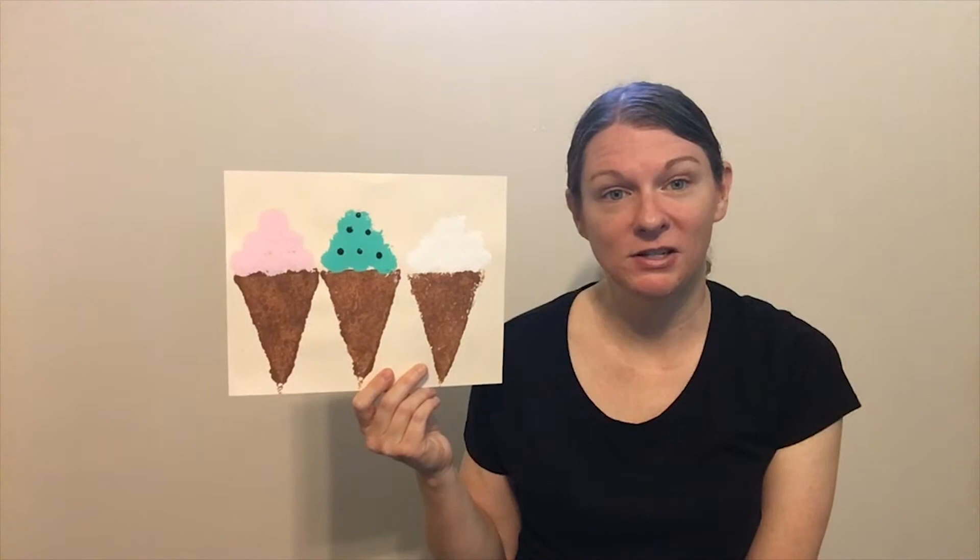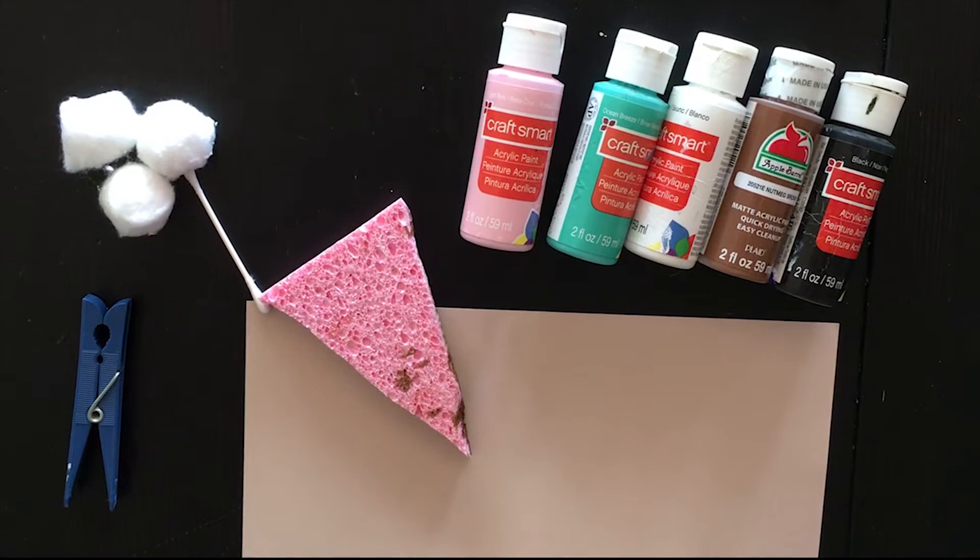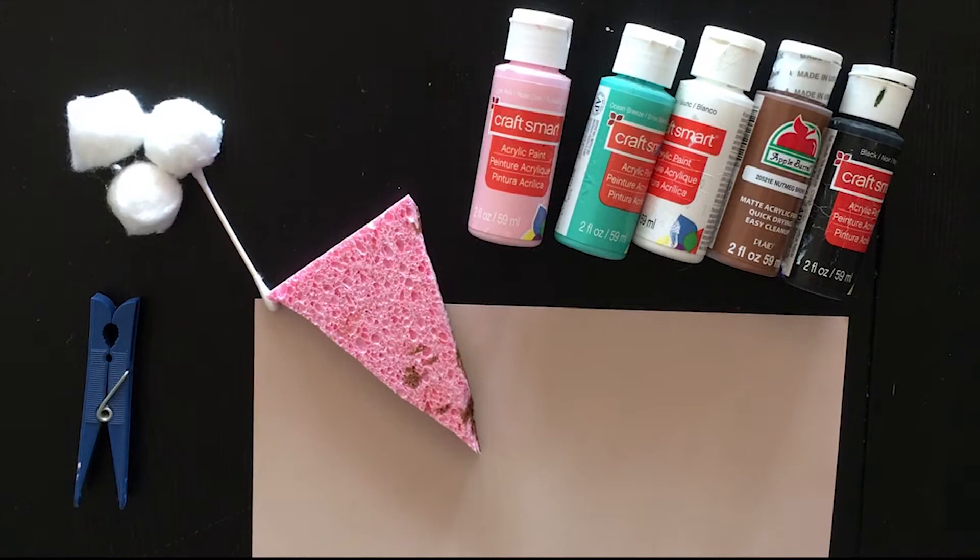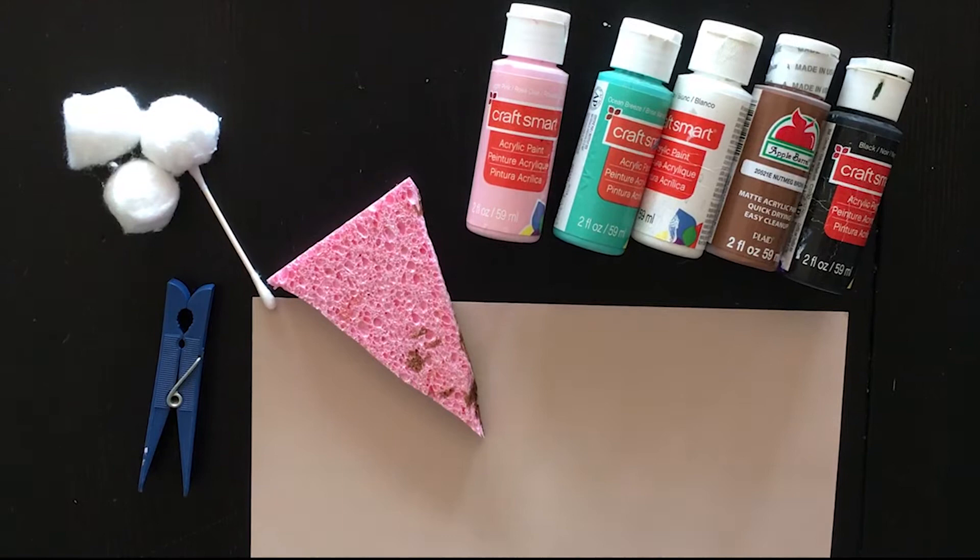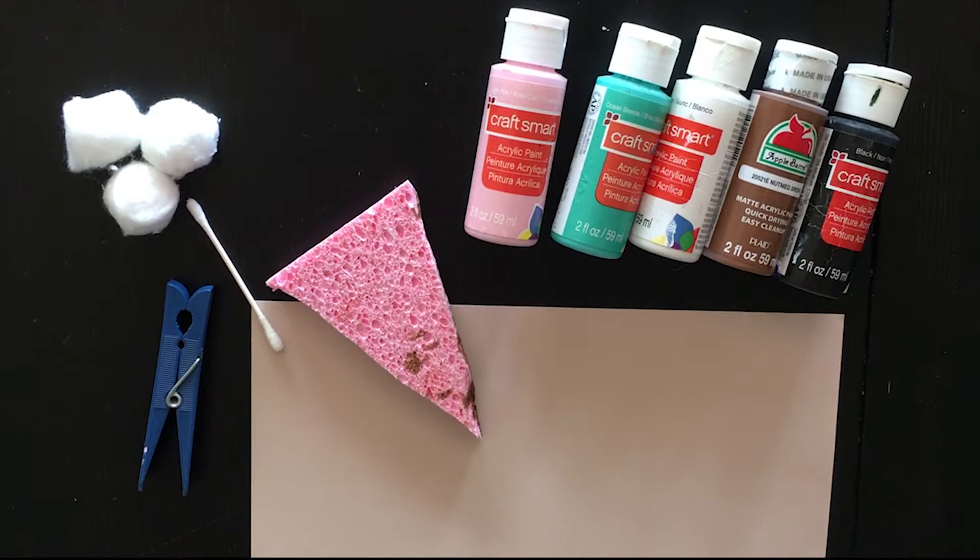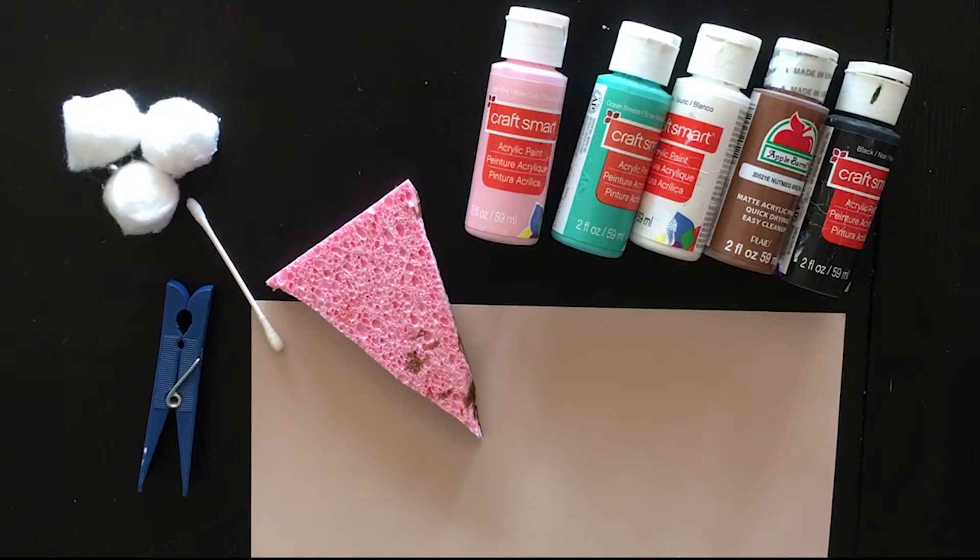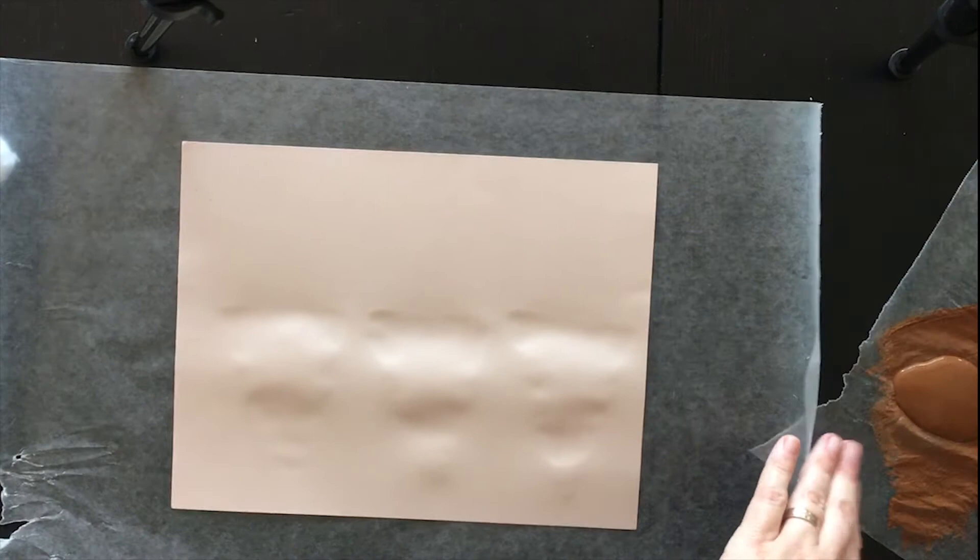For our craft this week, we're going to paint a picture of ice cream cones using sponges and cotton balls. The supplies you'll need are a piece of paper, something thicker like cardstock. A sponge cut into the shape of a triangle. A clothespin. A cotton ball, one for each color of paint you decide to use. A q-tip if you want to create sprinkles or chocolate chip type things. And then whatever color of paint you want for your ice cream.